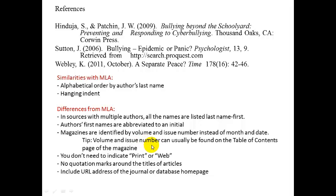Magazines are identified by volume and issue number instead of month and date, so you always want to make sure that you get those numbers. For example, in the Sutton entry: Bullying: Epidemic or Panic? Psychologist, 13(9) — that's the volume number and the issue number included in the periodical citation.